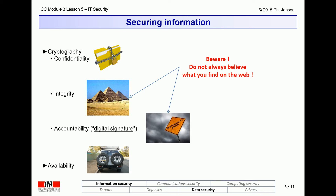Two of the main means for securing information in general are cryptography and availability mechanisms. Cryptography can be used in different ways: for protecting the confidentiality of information, for protecting its integrity, and for signing it digitally. In this video clip, we will focus on its use for confidentiality. The next video clip will discuss its use for integrity and digital signature.